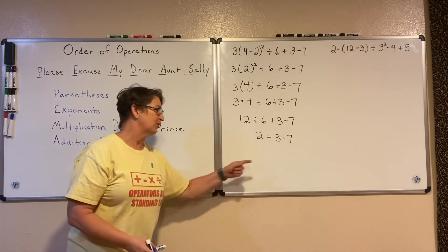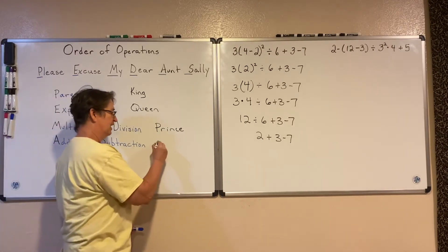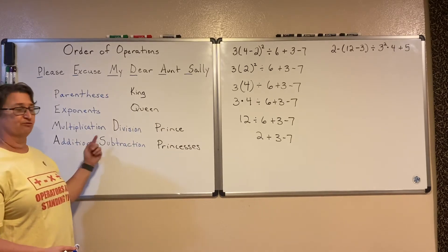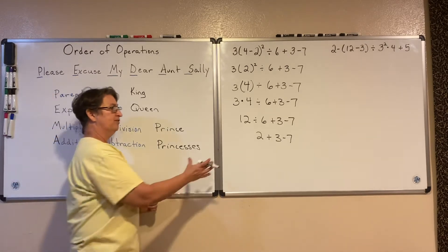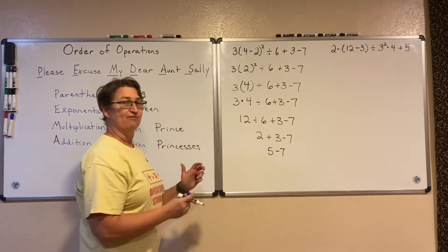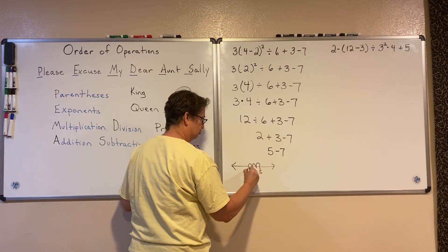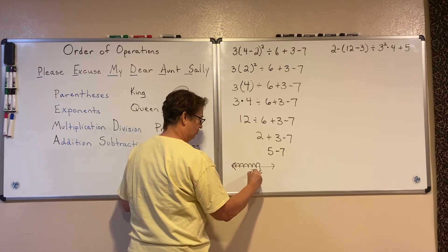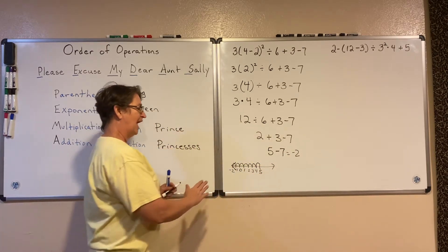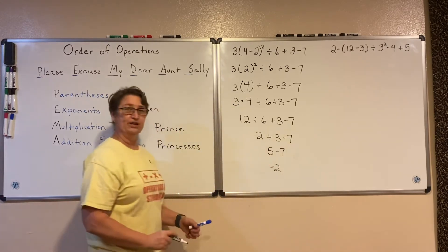Now the princesses take over the throne. Addition and subtraction are our princesses, and it depends on which was born first. If addition comes first, we perform addition first; if subtraction was born first, we do that first. In this case, addition comes first: 2 plus 3 is 5. Then 5 minus 7 — thinking on a number line, if I'm at 5 and go back 7 — that's equal to negative 2.